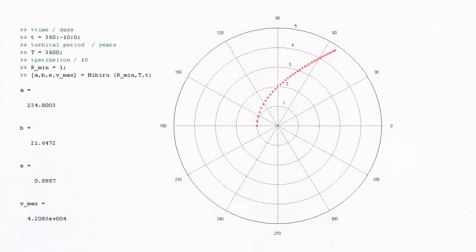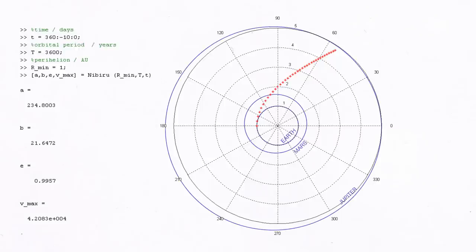In this image you can see the trajectory during an interval of 360 days. For orientation, I roughly include the orbits of Earth, Mars, and Jupiter. The 10-day position markers show the acceleration as Nibiru nears its perihelion.